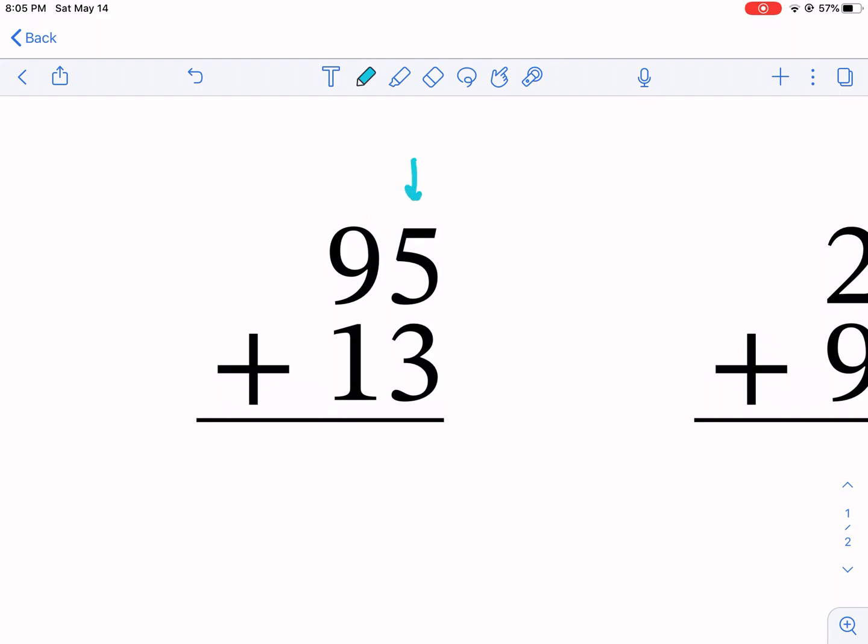As I said, we're going to start with the ones place, and we're going to do five plus three, and that is eight. We're going to write eight here. We got eight here, and then we do nine plus one, and that's 10, and there's our answer. It's as simple as 108.